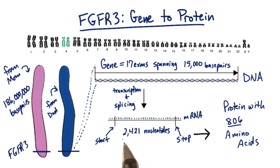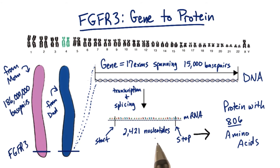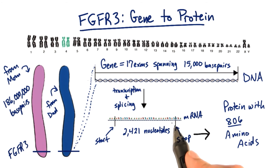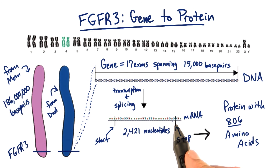Remember, we just divided 2,421 by 3 and then subtracted 1 from the overall answer because the last codon is a stop codon, which doesn't code for an amino acid — it's just empty.